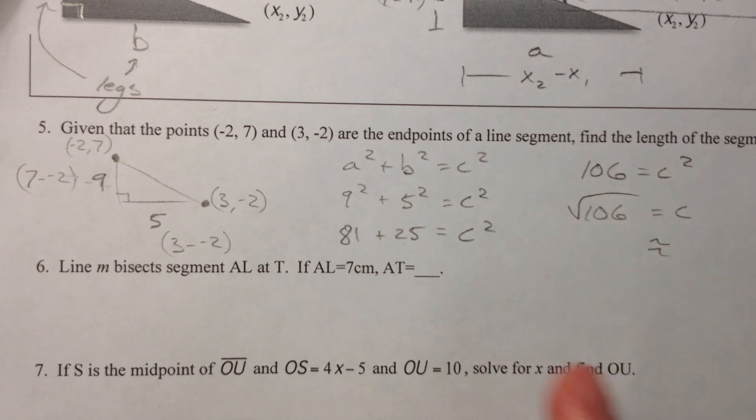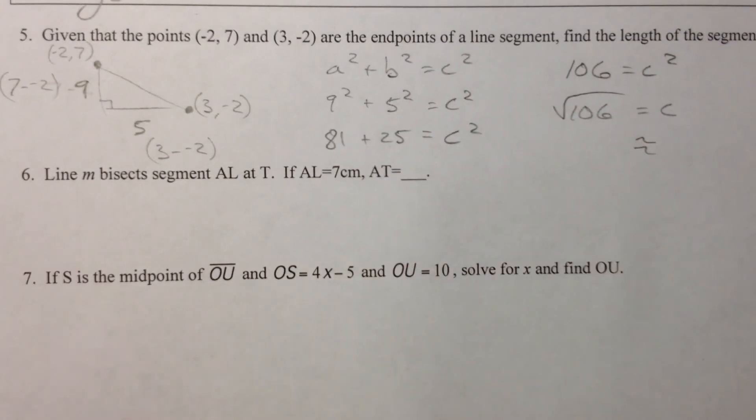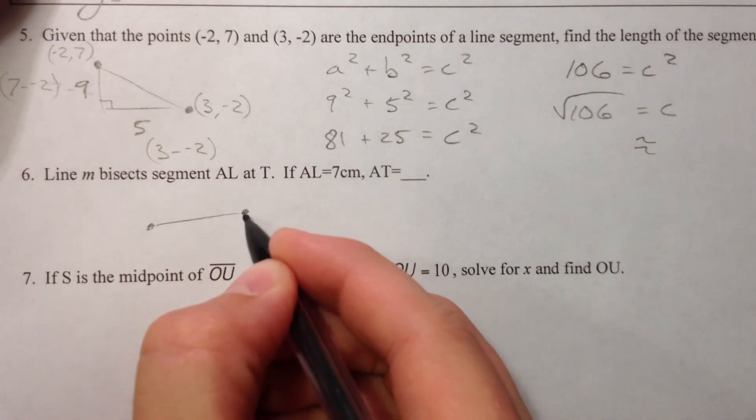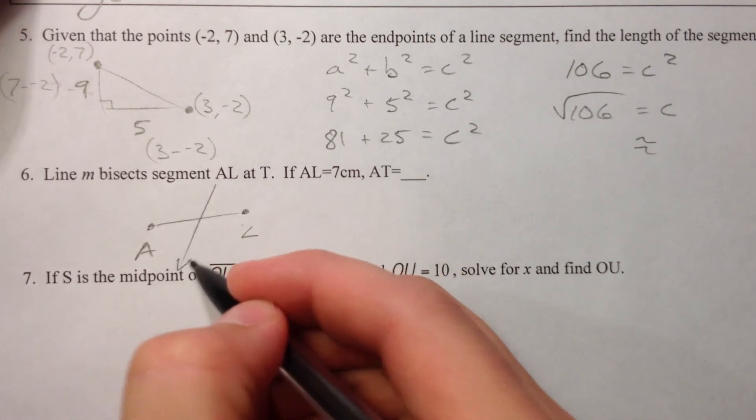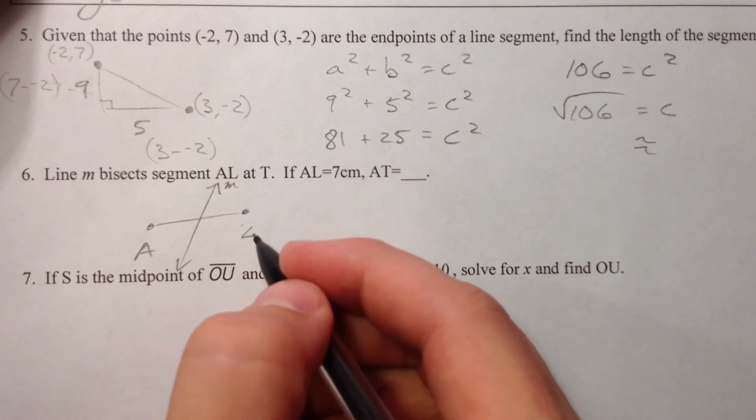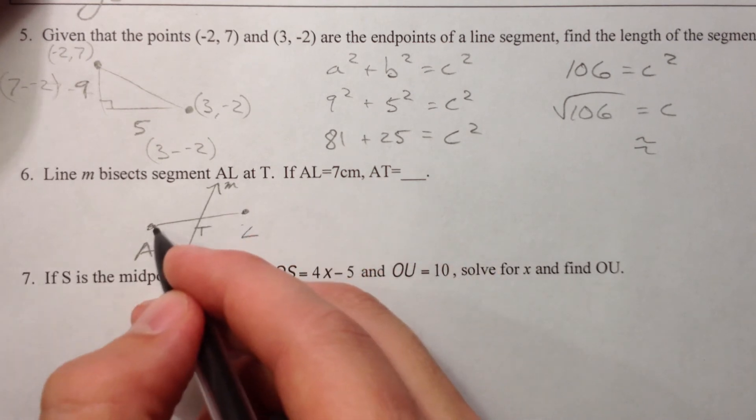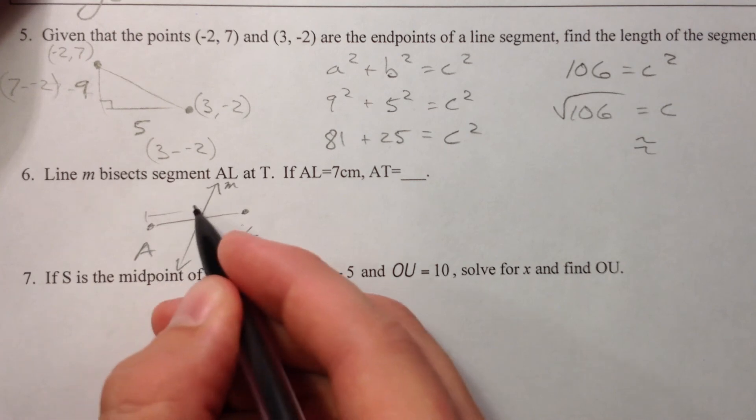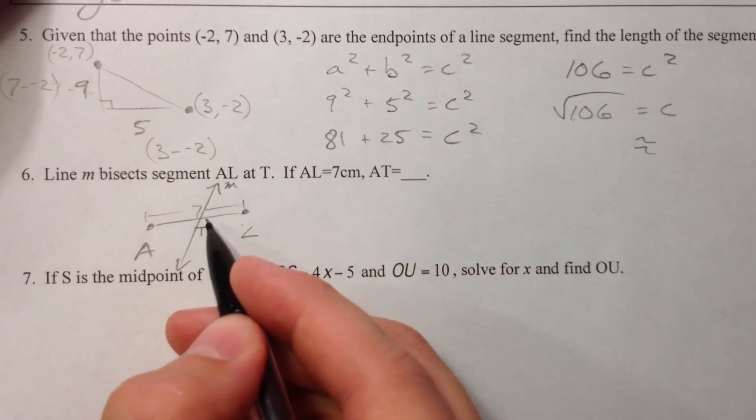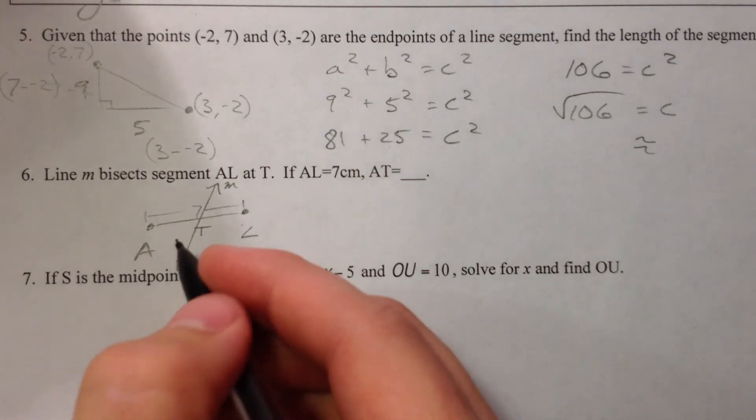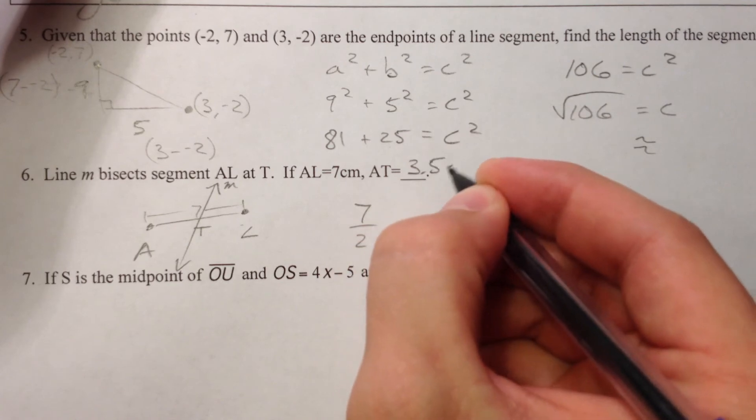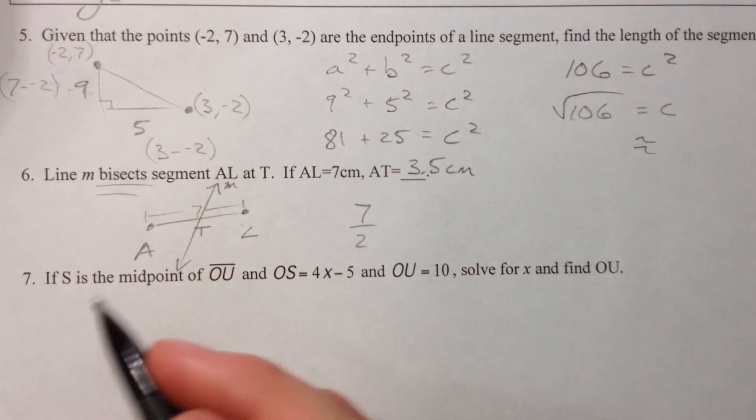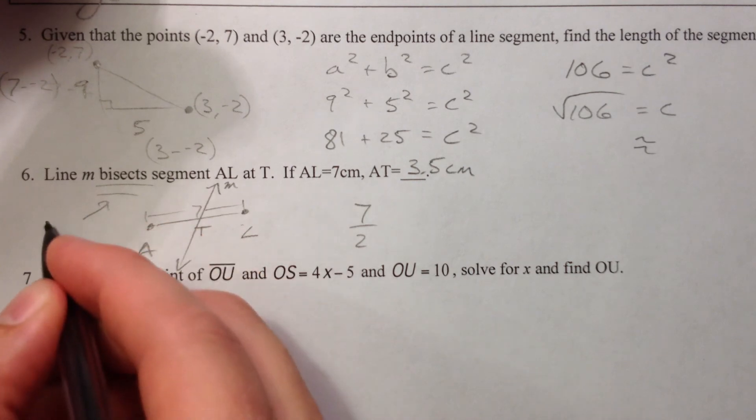So line m bisects AL at T. So we've got this line segment AL and it bisects line m, and it's going to bisect it at T. If AL is 7, the whole thing is 7. AT, because it's bisecting it, it's cutting it in half, half of it is going to be 7 divided by 2, 3.5 centimeters. And so that's just understanding what bisects mean. Bisects means cuts in half.